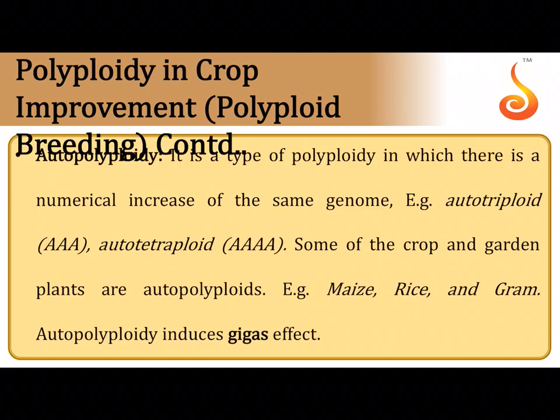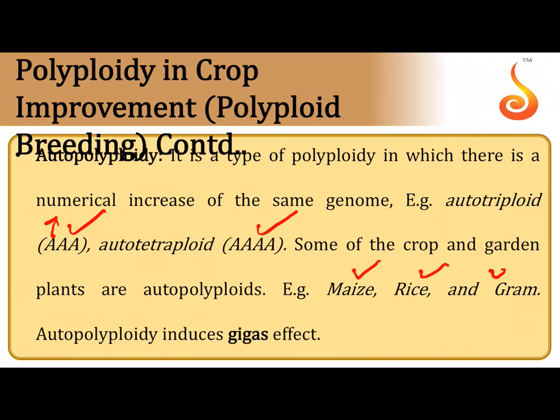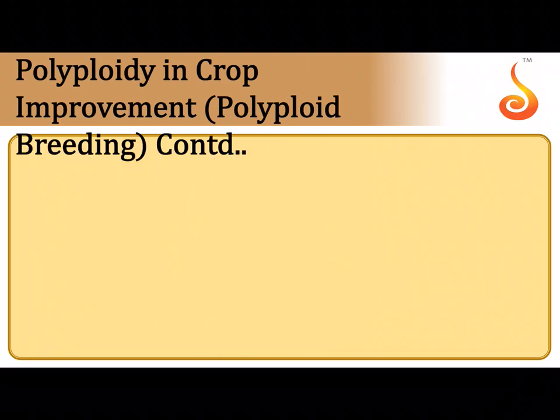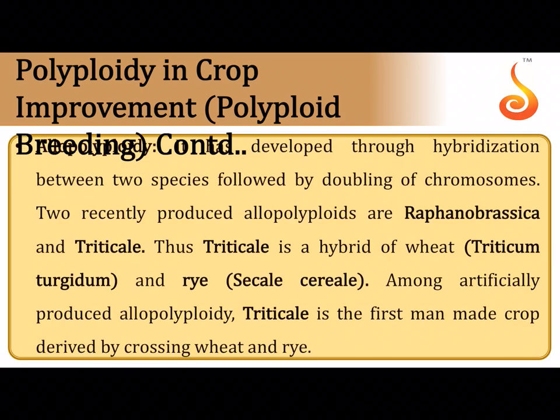In autopolyploidy, the same chromosome set is represented multiple times — triploid (AAA), tetraploid (AAAA). This is achieved by treating dividing cells (e.g., the zygote) with colchicine or granosan to stop mitosis, resulting in double the chromosome number. A diploid cell treated this way becomes tetraploid. This is seen in maize, rice, and gram, where a sufficient gigas effect is exhibited.